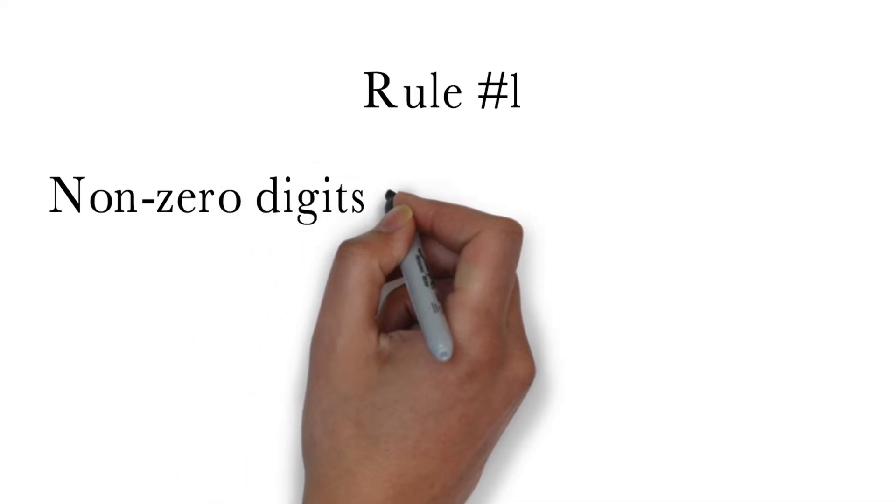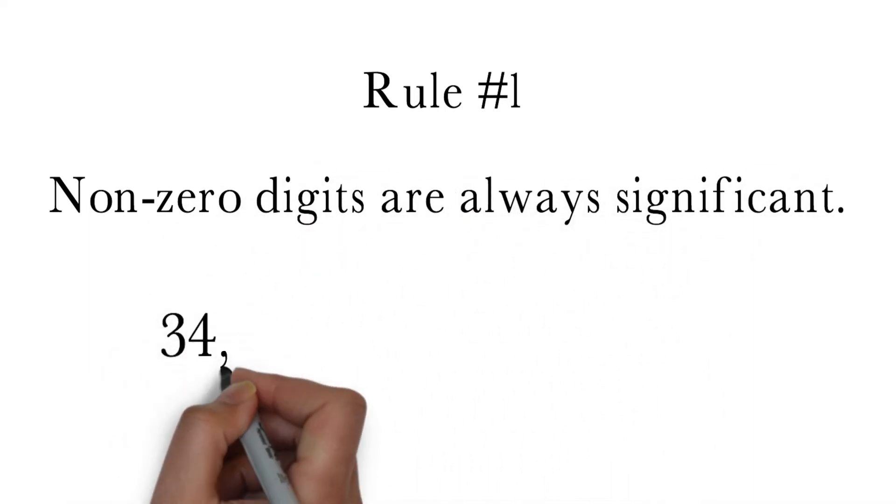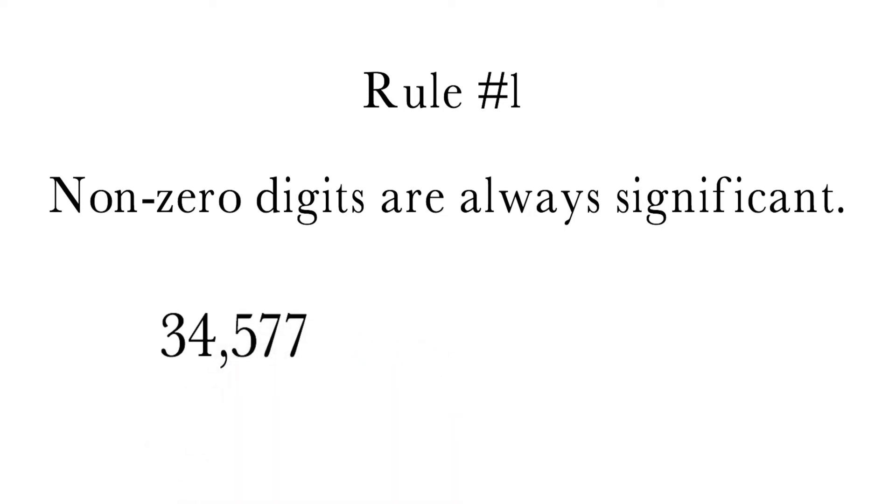The first rule of significant digits is non-zero digits are always significant. For example, 34,577 has five significant digits, 95 has two significant digits, and 8 has one significant digit. Keep in mind these numbers represent measurements, not exact values.